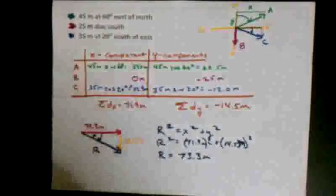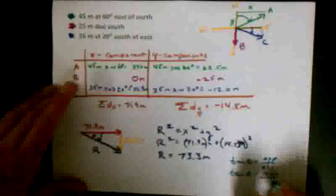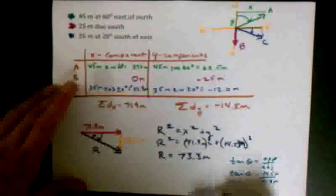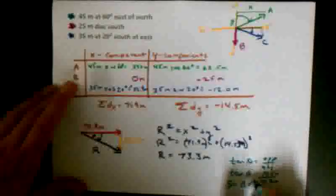Then let's use inverse tangent to get the angle. So tan theta equals opposite over adjacent. Tan theta equals 14.5 meters over 71.9 meters, and so theta turns out to equal 11.4 degrees.